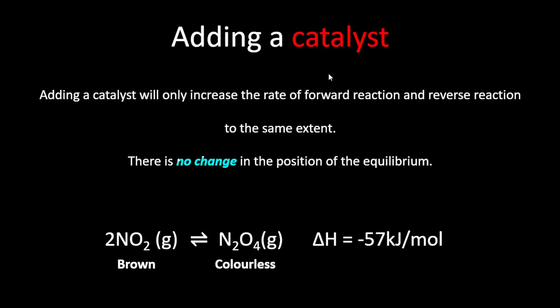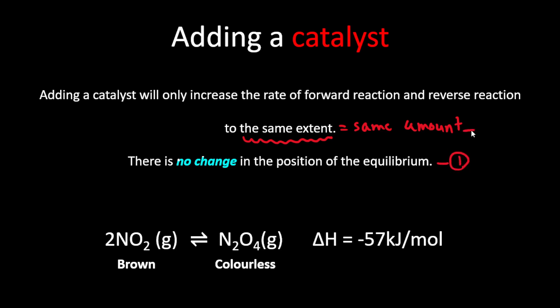The last topic is catalyst. Adding a catalyst will only increase the rate of the forward reaction and reverse reaction to the same extent. There is no change in the position of the equilibrium. Just because you're adding a catalyst, it doesn't really change whether your reaction is going to the left or the right — it only speeds up the rate of reaction by the same amount. There is no change in the position of the equilibrium. Make sure that you are able to write down this property. Thank you very much and I'll see you guys again next time. Bye!